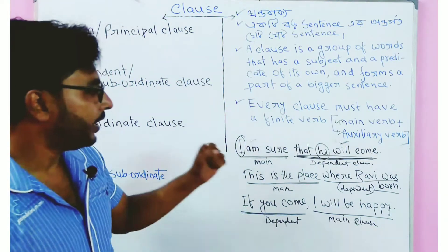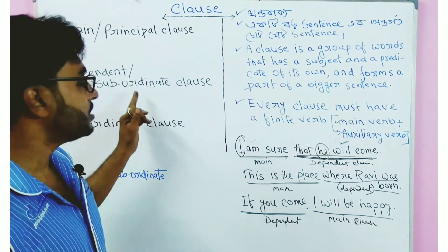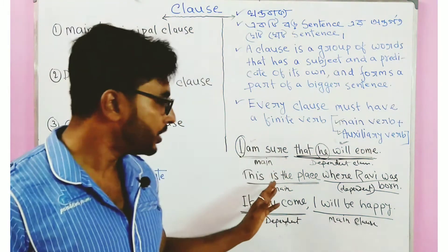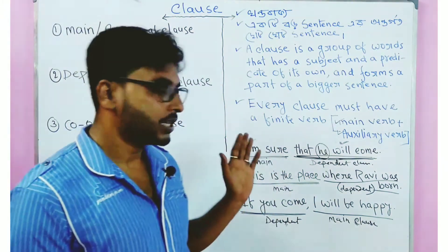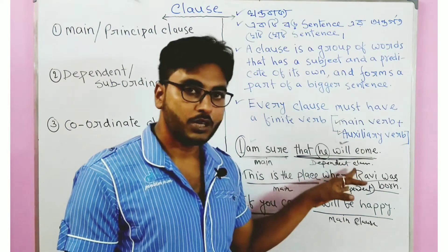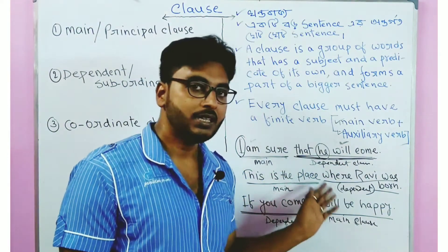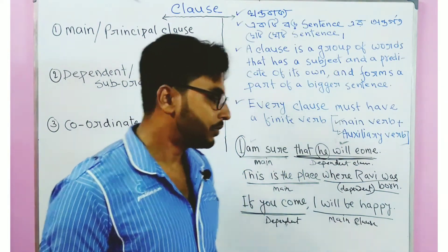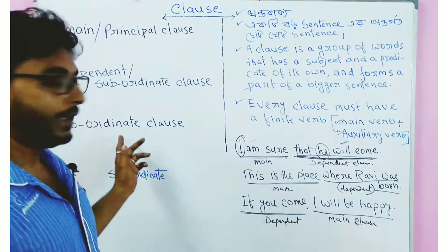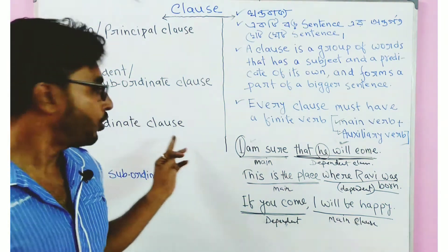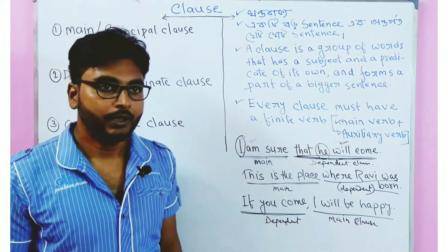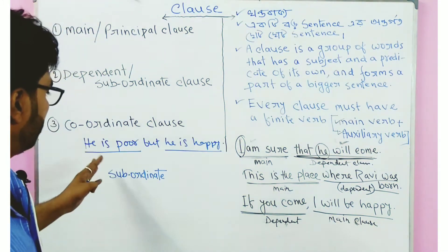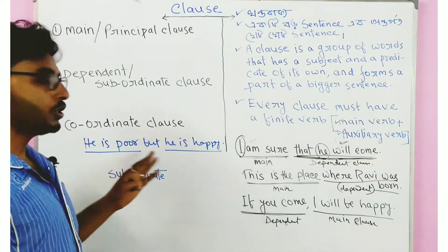Friends, so we have three types of clauses: main clause, subordinate clause (dependent clause), and coordinate clause. The coordinate clause is the third type.